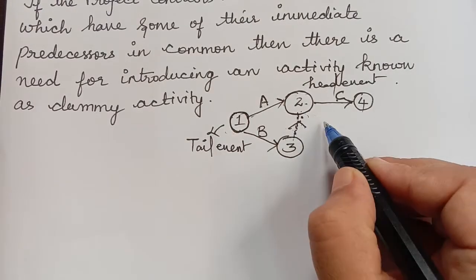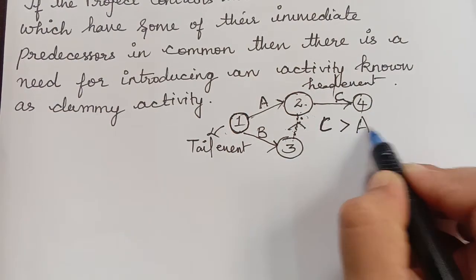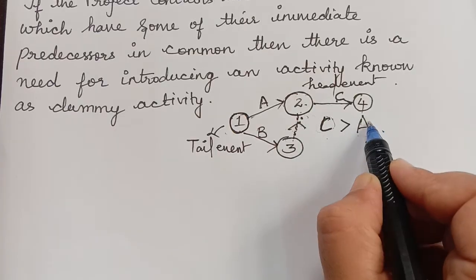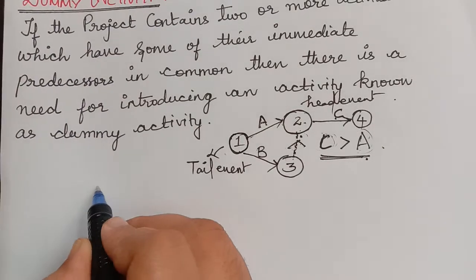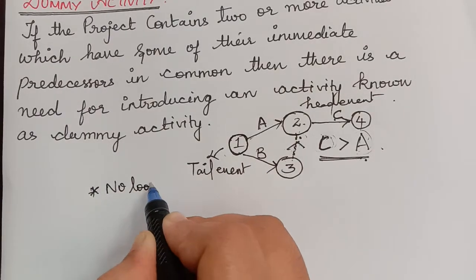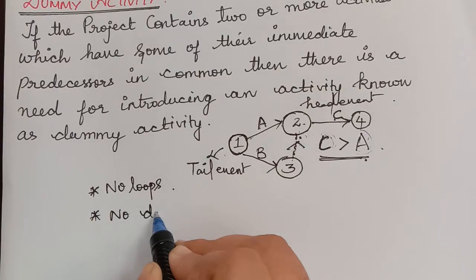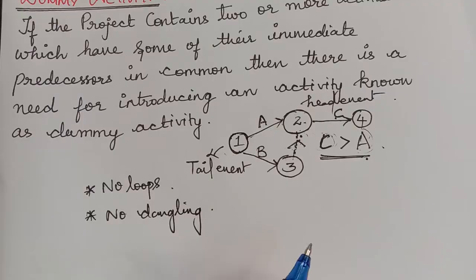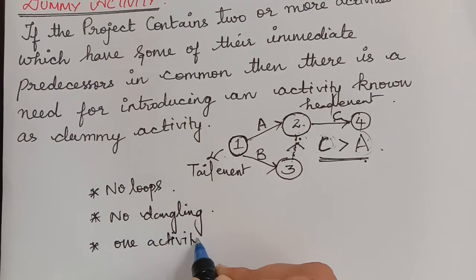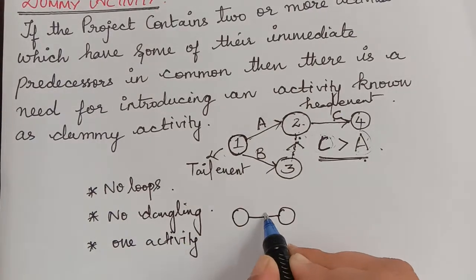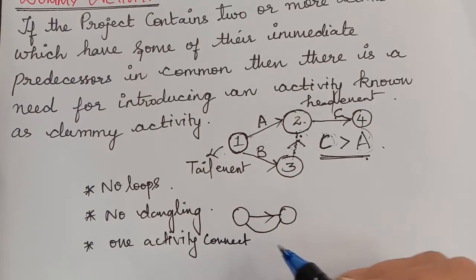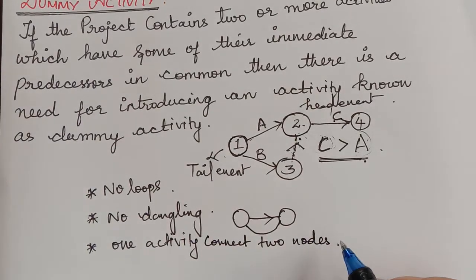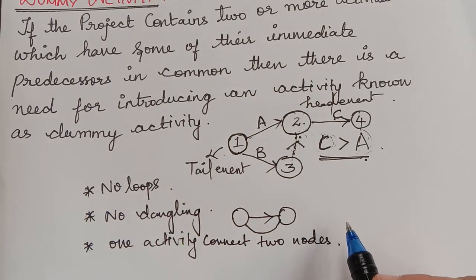We may sometimes write C > A, which implies that C is the successor of A and A is the predecessor of C. There are also certain rules for constructing a network: the network should not have loops, there should be no dangling, and only one activity should connect any two nodes — we cannot have two activities connecting the same pair of nodes. In our next video, we will learn how to draw the network and calculate the critical path. Thank you.